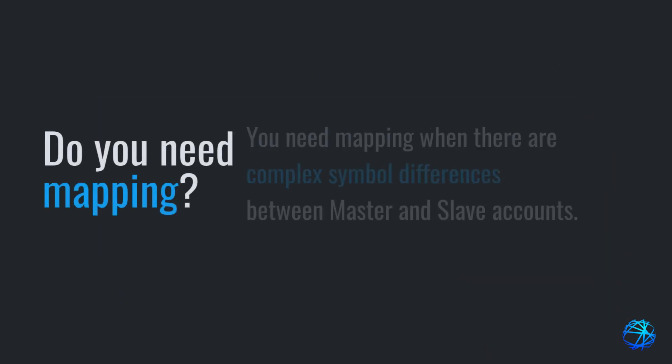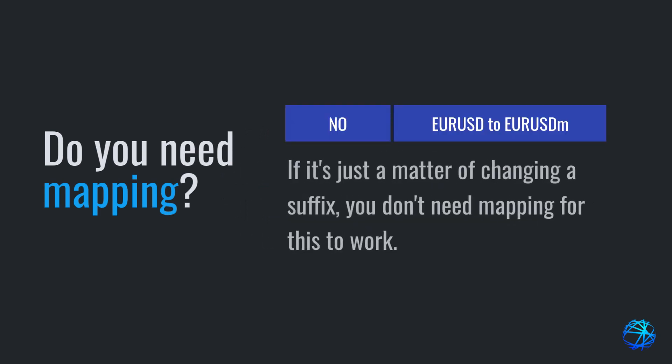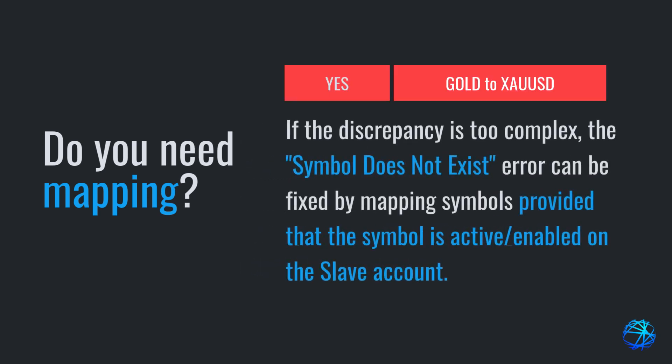We need mapping when there are complex symbol differences between master and slave accounts. If it's just a matter of changing a suffix, like EURUSD to EURUSDM, we don't need mapping for this to work. When dealing with discrepancies like GOLD to XAUUSD, the Symbol Does Not Exist error can be fixed by mapping symbols, provided the symbol is active or enabled on the slave account.